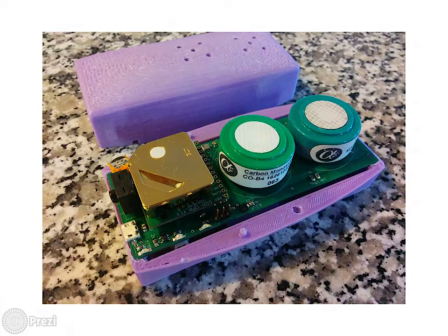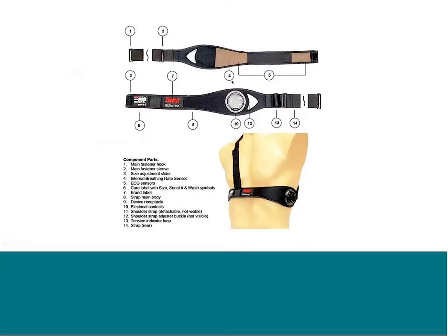This is a commercially available instrument called the Zephyr Bioharness, which measures a number of different parameters including core temperature, heart rate, heart rate variability, breathing rate, and activity level. This is an example of people doing physiological measurements at the same time as environmental measurements to see if there's a correspondence between the two. The Zephyr has a software development kit that comes with it, so it was easy for us to patch the measurements into our platform.